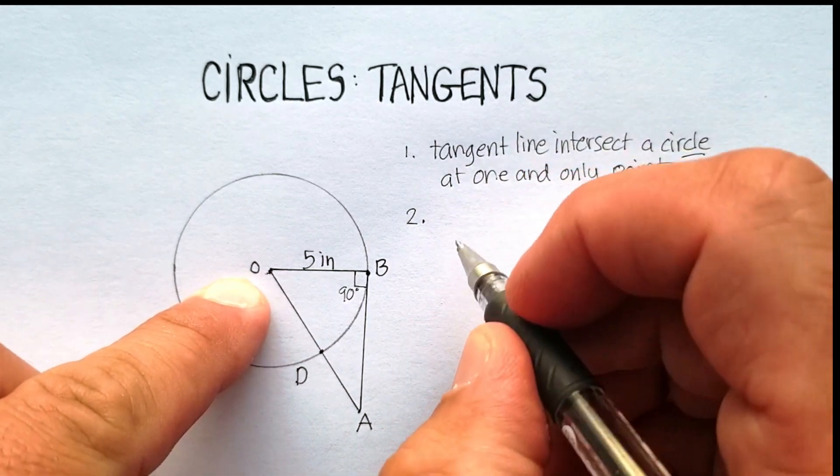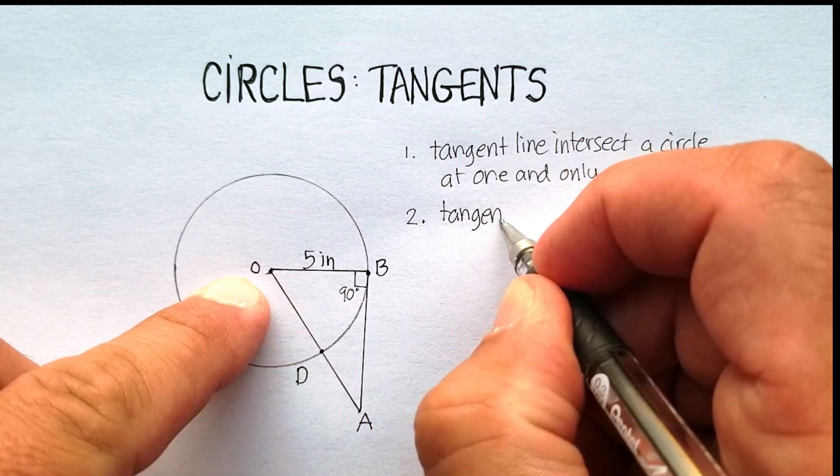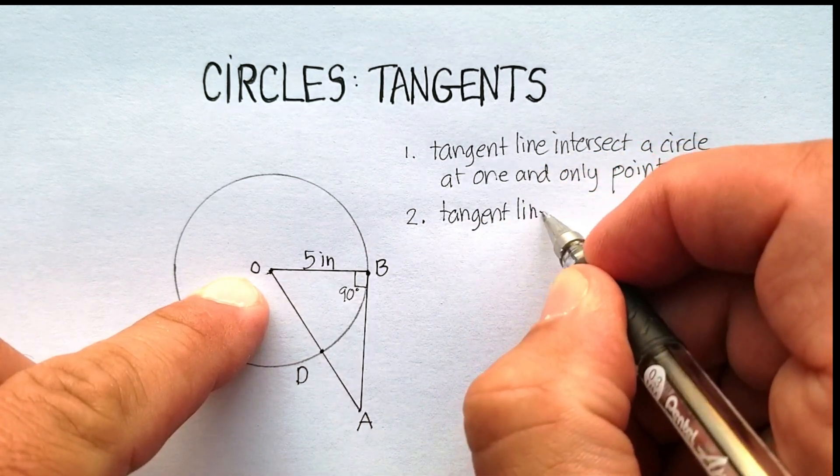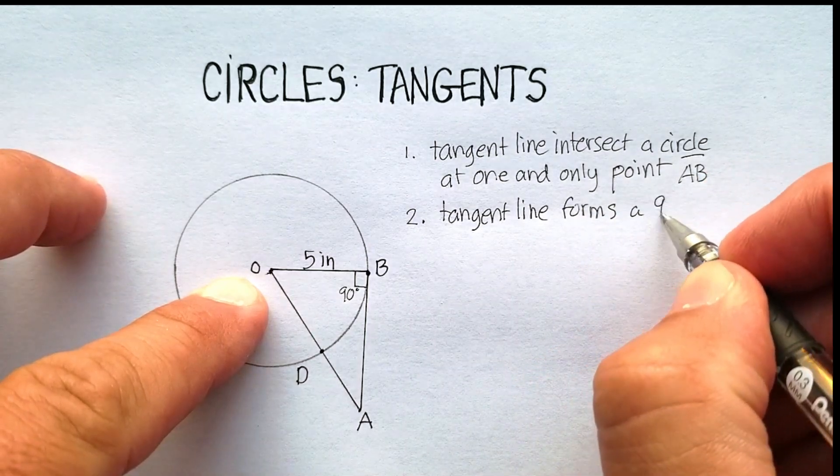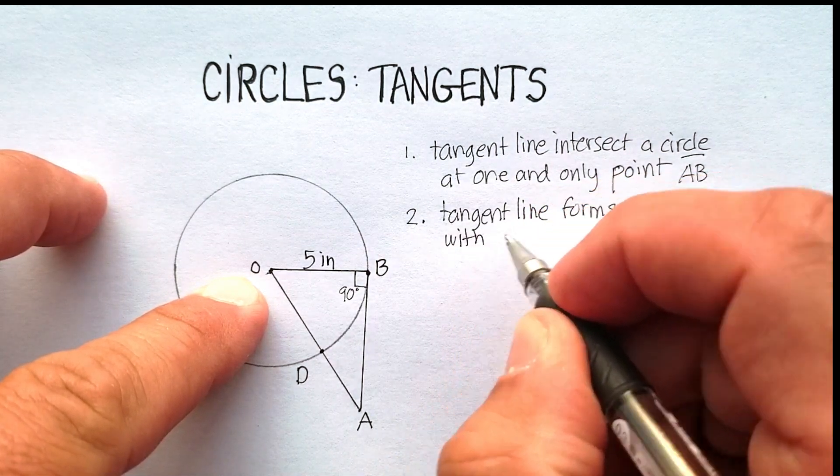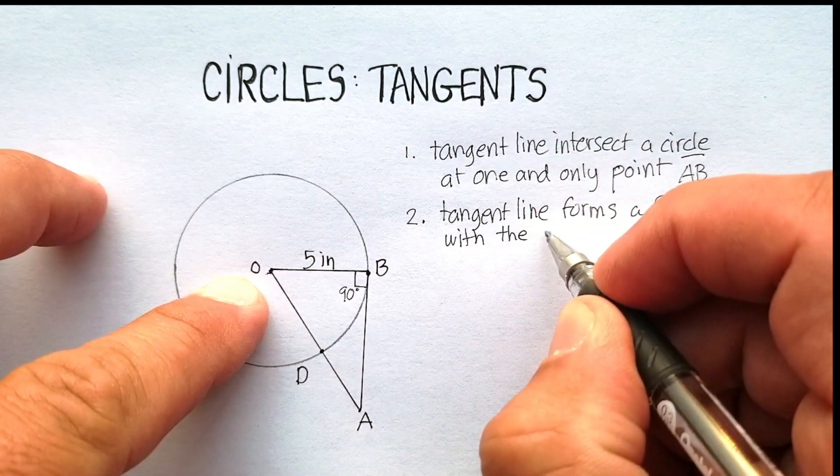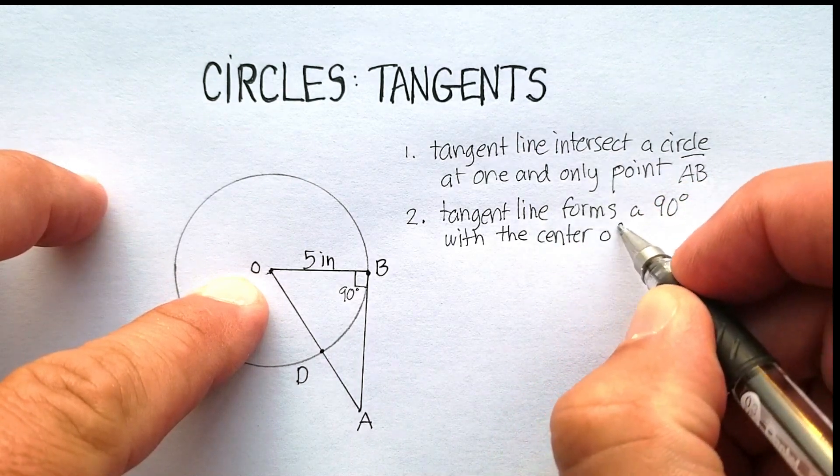Which effectively in this particular example forms a right triangle. Okay, but let's just go ahead and write that down. So tangent lines, a tangent line forms a 90 degree angle with the center of the circle.